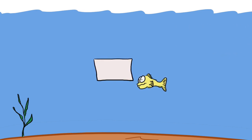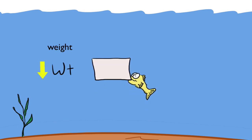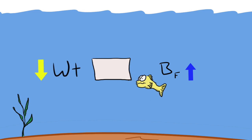All this to say, any submerged object has two distinct forces acting upon it. The downward force of weight and an upward buoyant force. When the weight is greater than the buoyant force, the object sinks.